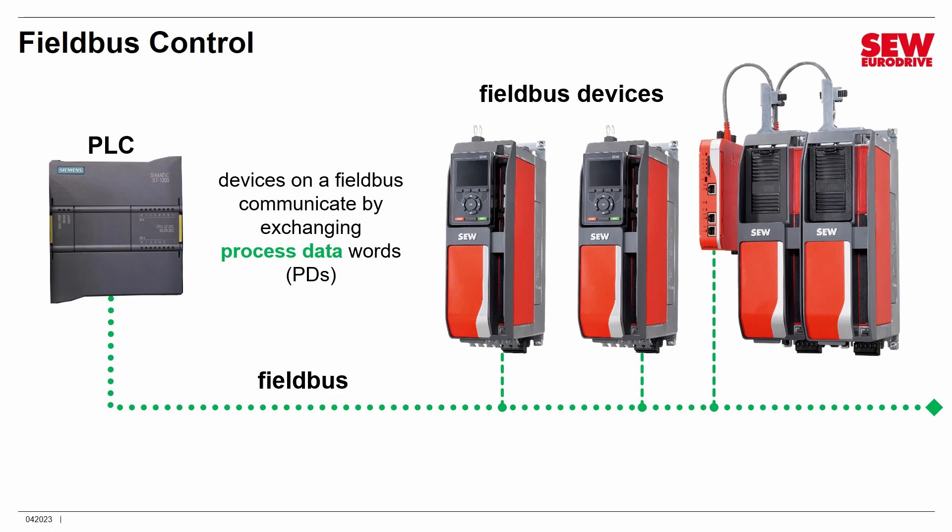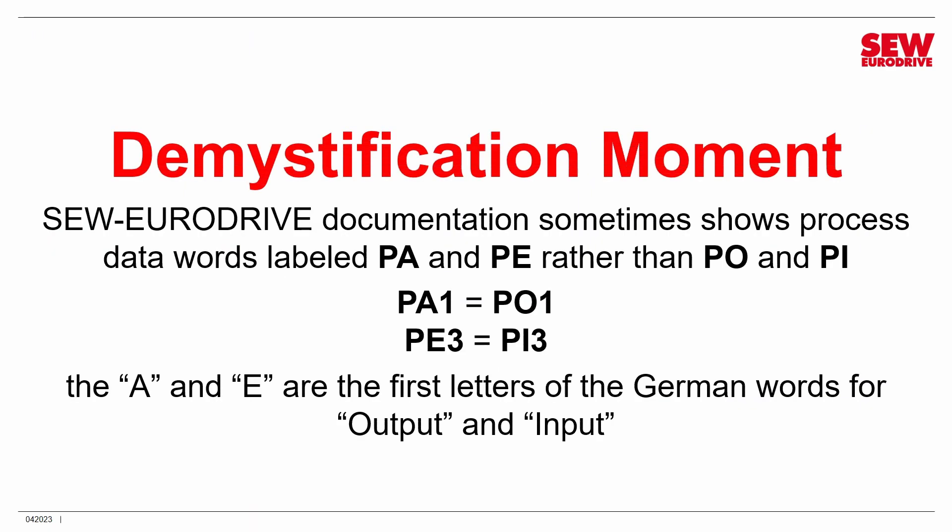Process output words typically carry commands and parameters telling VFDs what to do, while process input words contain status information going back to the PLC. One clarification: in some SEW documentation and software, POs and PIs may be labeled PA and PE. That's German — A and E are the first letters of Ausgang and Eingang, meaning output and input. Just mentally substitute PO and PI and you'll be fine.